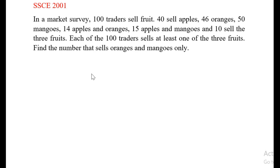The question says that in a market survey, 100 traders sell fruits: 40 sell apples, 46 sell oranges, 50 sell mangoes, 14 sell apples and oranges, 15 sell apples and mangoes, and 10 sell all three fruits. Each of the 100 traders sells at least one of the three fruits. Find the number that sell oranges and mangoes only.